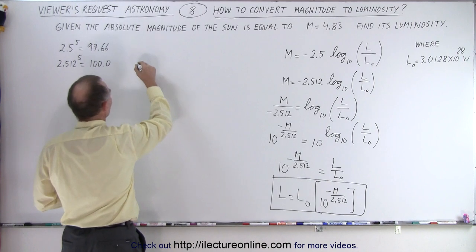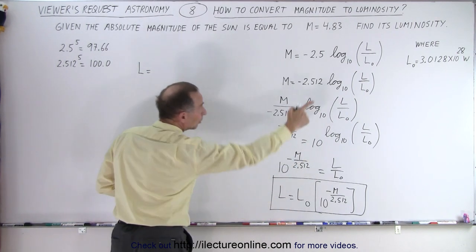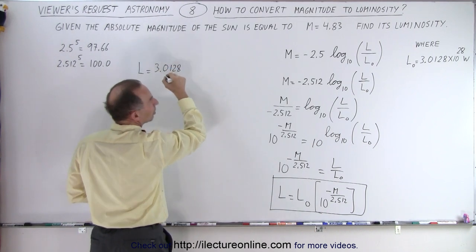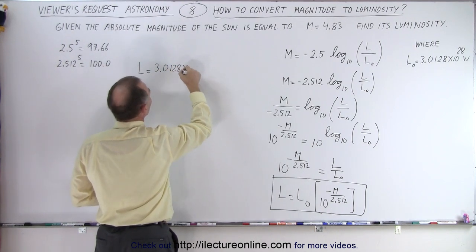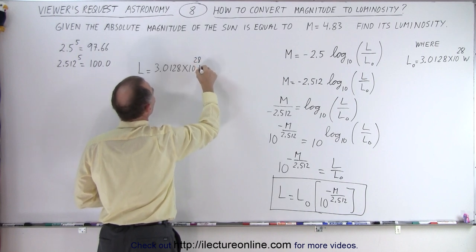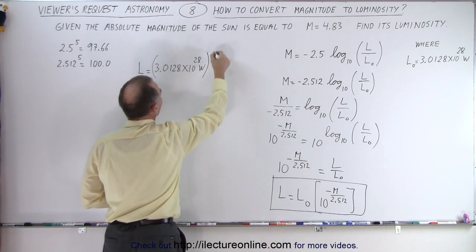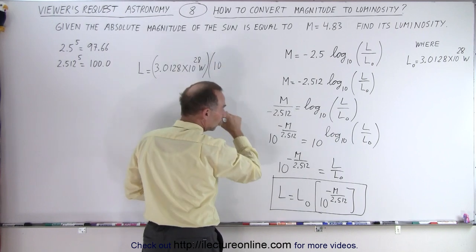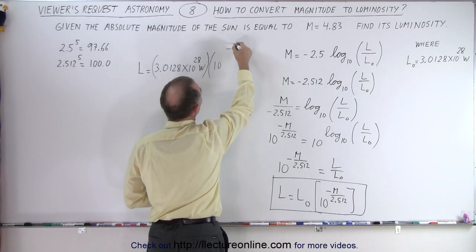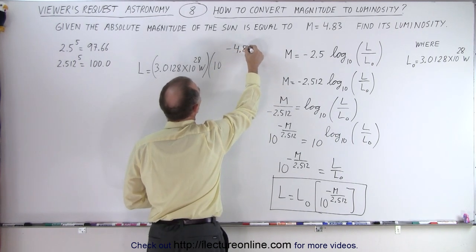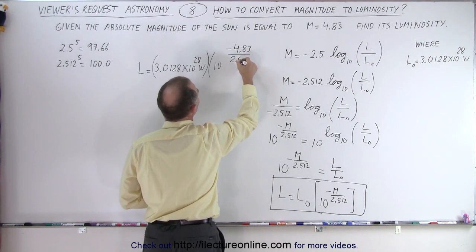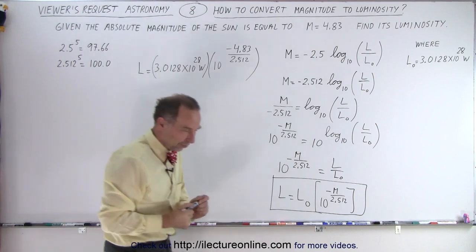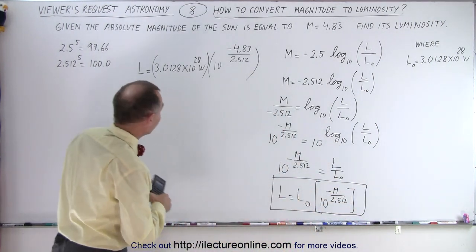All right, so let's calculate the luminosity. L equals the baseline luminosity of 3.0128 times 10 to the 28 watts, and we're going to multiply that times 10 raised to the negative magnitude 4.83 divided by 2.512. There we go. That should give us the luminosity of the Sun, and that's how we find the luminosity of any star.